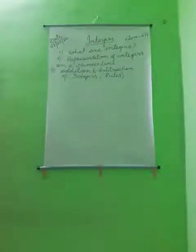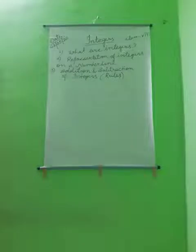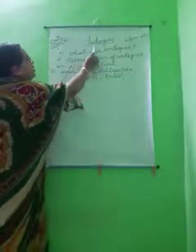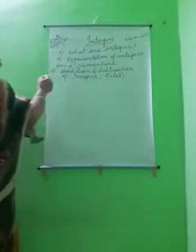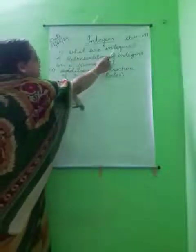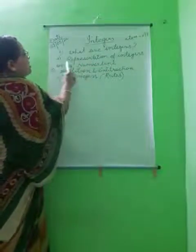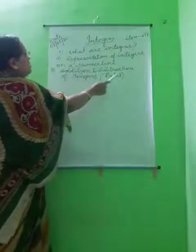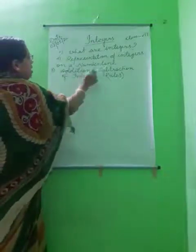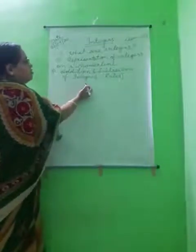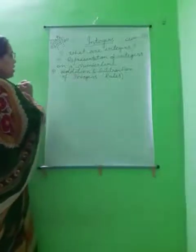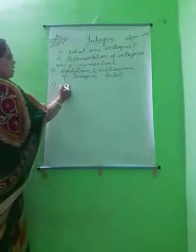Your maths textbook is Mathematics by R.S.A.L.A. Today we will study about integers. First we will discuss about what are integers. Next is representation of integers on a number line. Third is rules of addition and subtraction of integers. Now our first point is: what are integers?